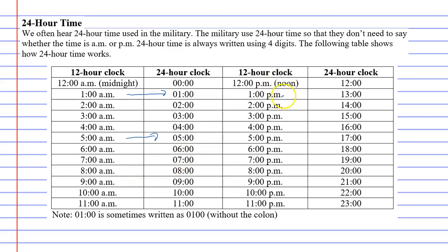Whereas if we look at the p.m. times they are different. 1 p.m. is 1300 hours, and I hope you notice that all you need to do is add 12 and that will give you the 24-hour time. So 1 plus 12 is 13, 5 plus 12 is 17, 8 plus 12 is 20 — so 8 p.m. is 2000 hours, and 9 p.m. is 2100 hours.